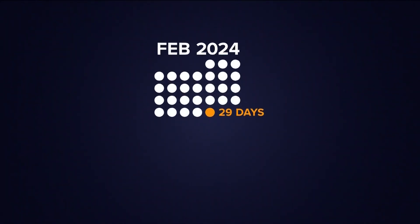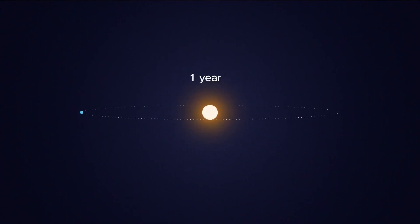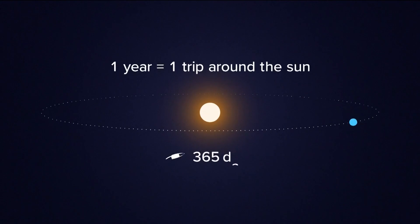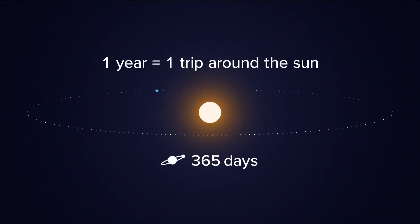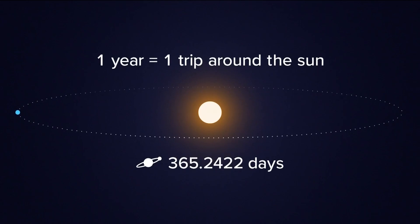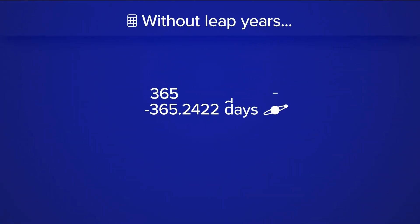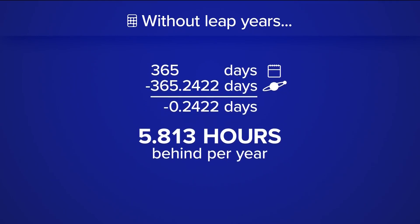2024 is a leap year, and the question arises: why do we have leap years? Well, the Earth takes one year to revolve around the sun — not exactly. It actually takes 365.2422 days. So when you subtract and find the difference, it's not zero. We realized we're behind about 5.8 hours each year.